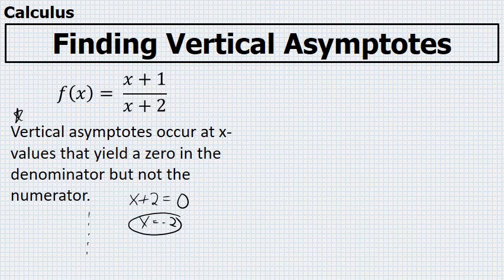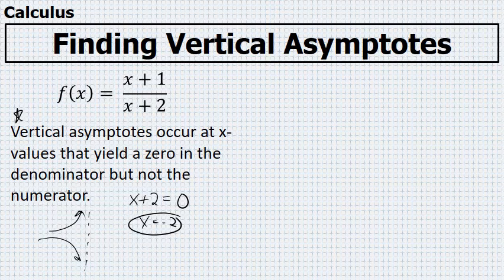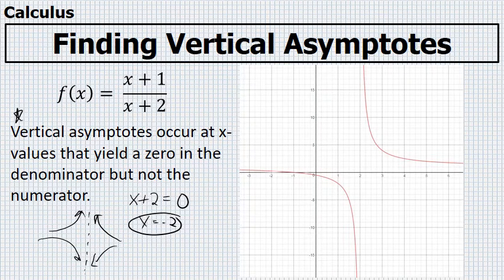A vertical line that is technically not part of the graph, that the function will get closer and closer to from the left in some fashion, and closer and closer to from the right in some fashion, yet never touch. The graph of this function is now pictured here on the right side of the screen, and you can see that at x equals negative 2, the line x equals negative 2, there will be an imaginary dotted line that this graph will get closer and closer to, but never touch.